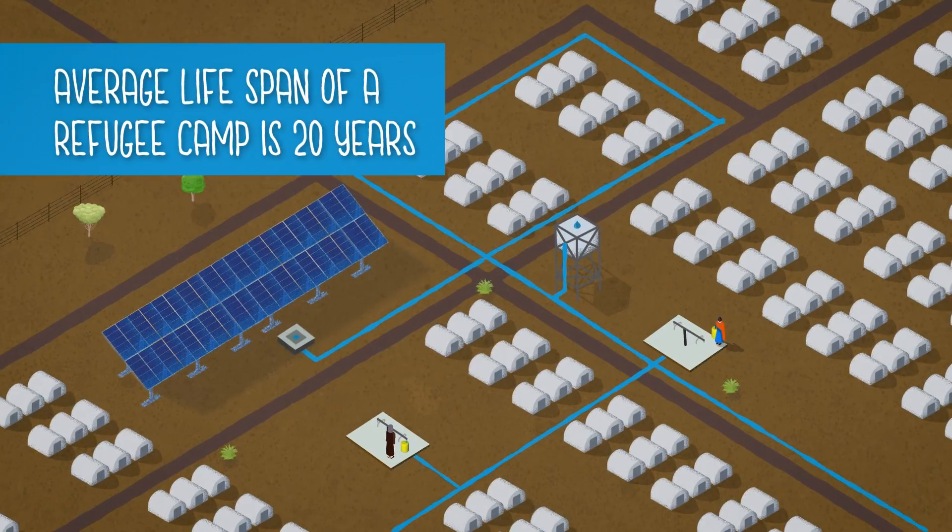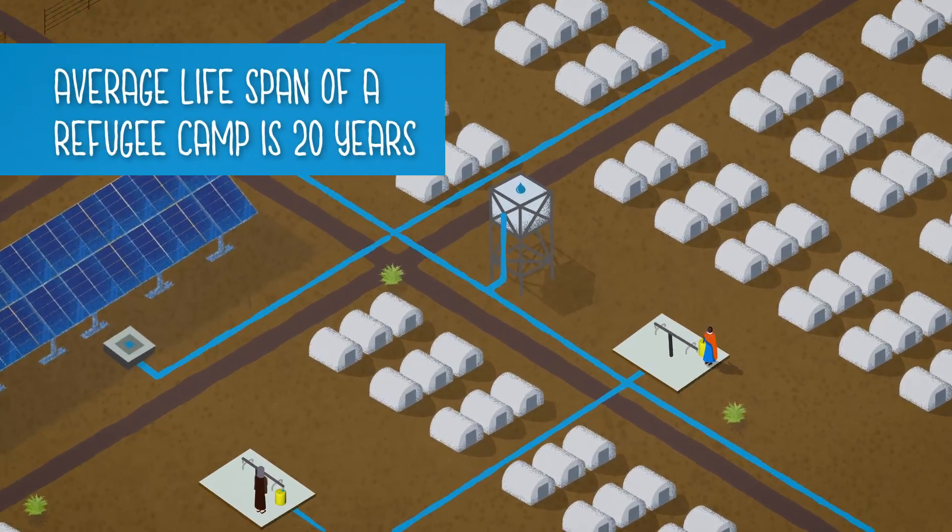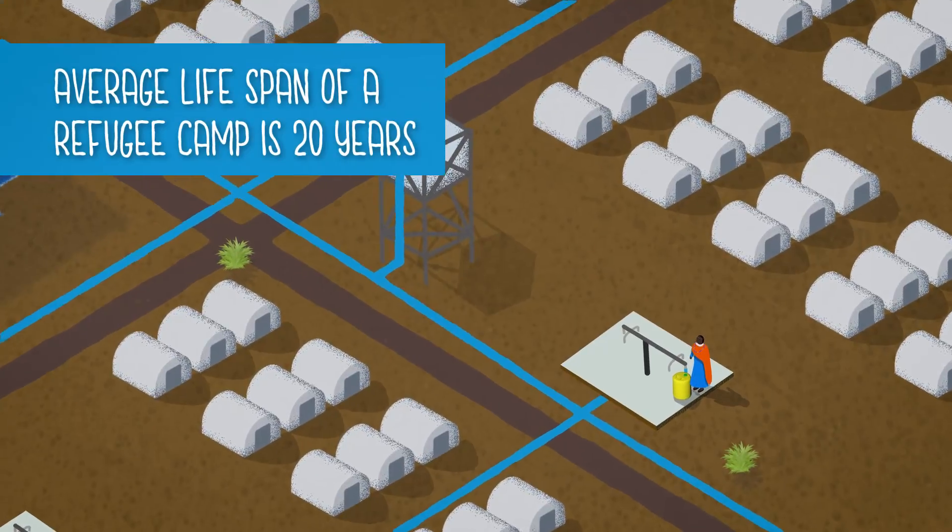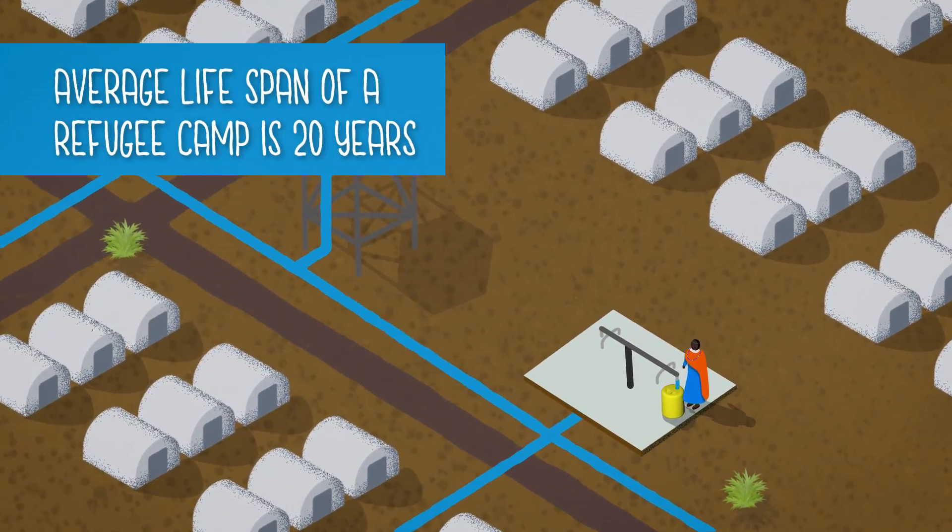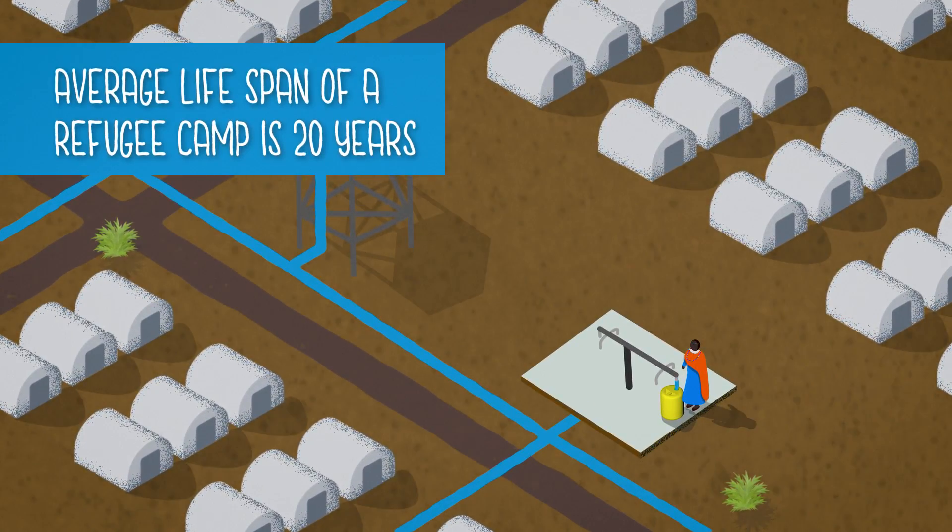The average lifespan of a refugee camp is about 20 years. This presents a huge challenge to provide services for people that are quick to set up but also robust and long-lasting.